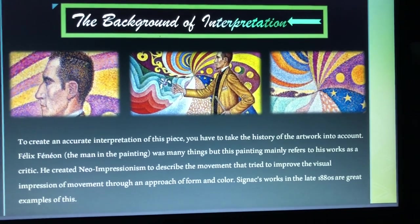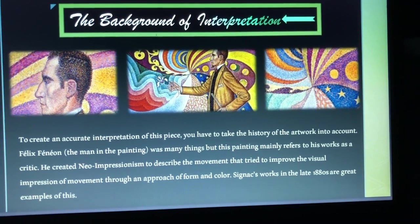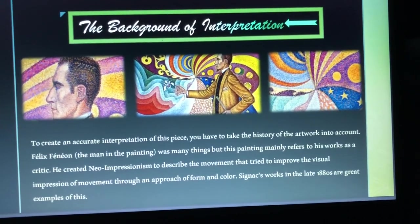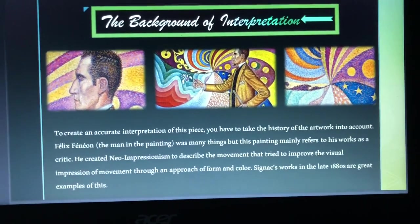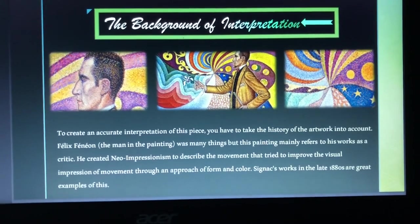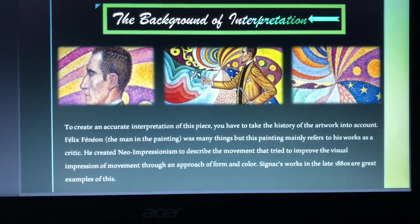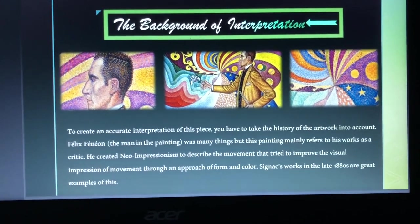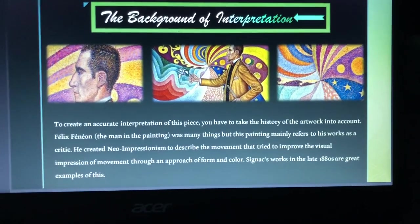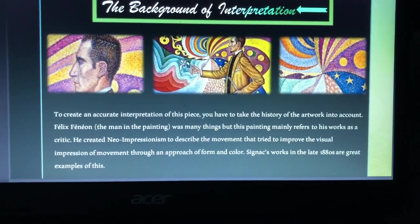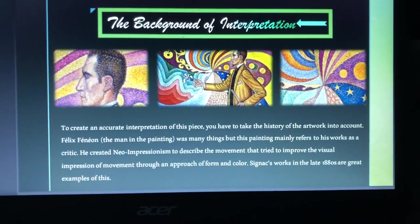I felt like it wasn't right to start my interpretation without explaining the background first. To create an accurate interpretation, I had to take into account the history of the artwork. Félix Fanon, the man in the painting, had many different jobs, but for this one, Paul mainly referred to him for his work as a critic in art. He kind of created the term neo-impressionism to describe the movement that tried to improve the visual impression of movement using more of an approach of form and color — whereas before, a lot of works were very still life and very realistic. Signac's works in the late 1800s are great examples of neo-impressionism, so I thought it was important to mention this before getting into the interpretation.